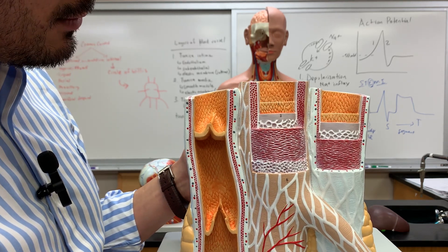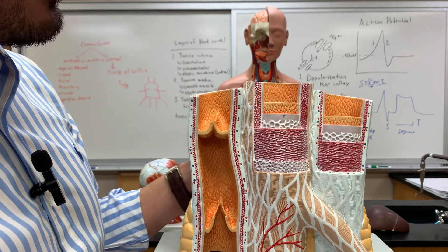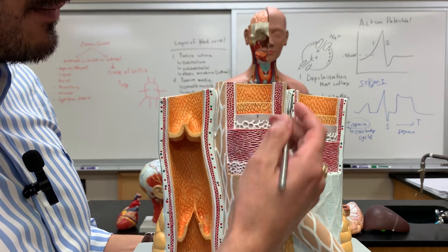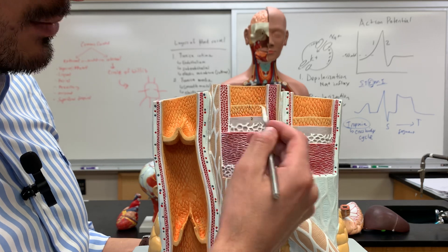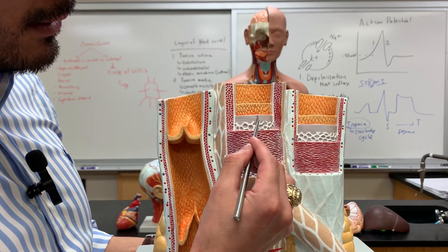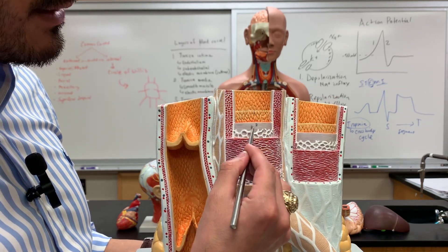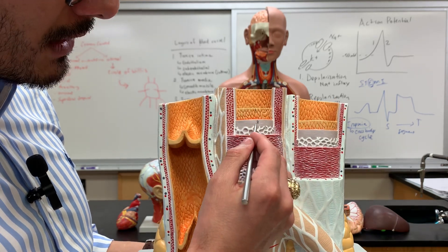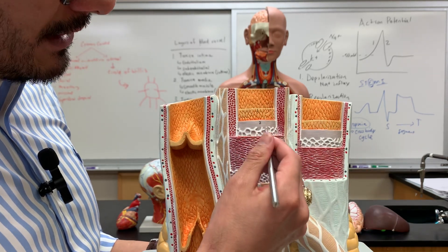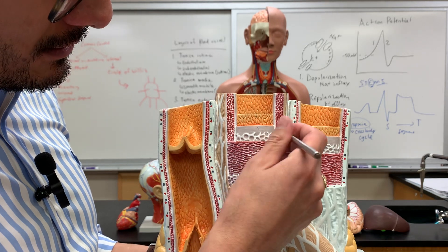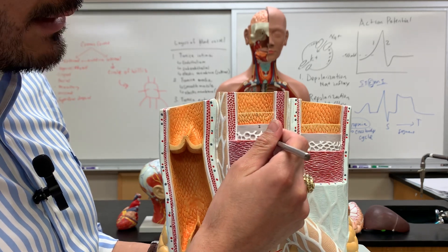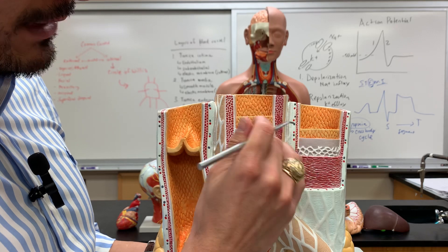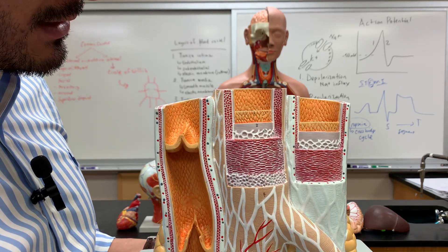The tunica intima includes three different layers. Number one is the endothelium, which is composed of simple squamous tissue. Number two is the subendothelial layer. And number three is the internal elastic membrane. Those are the three layers included in the tunica intima.